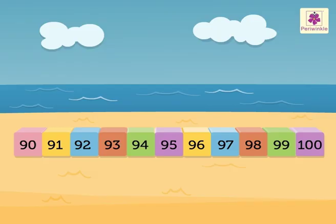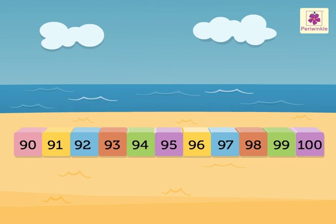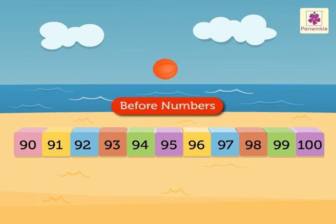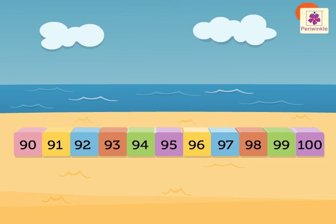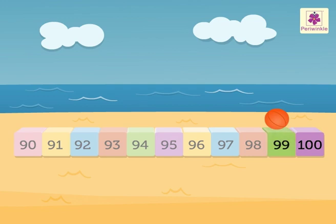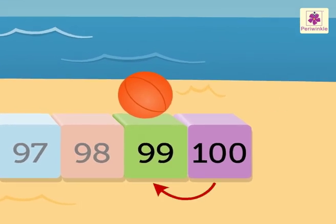Today let us play with a ball and revise before, after, and between numbers. Do you remember what we mean by before numbers? When we count backward from a given number, we get the numbers before. Look, the ball is on number 100. Which number comes before 100? 99!